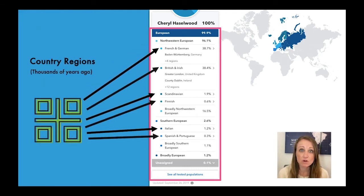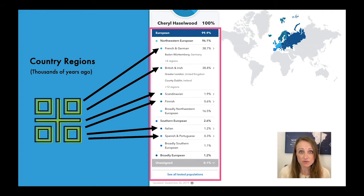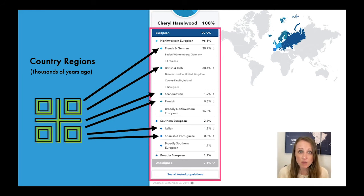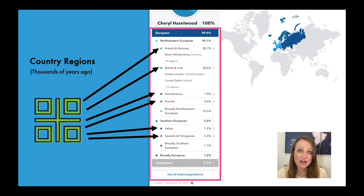The next kind of regions are more country- or region-specific — French and German, Scandinavian, Italian. These are useful but aren't always completely accurate. They're telling you you're from these places, and you may or may not be, but they're really good places to start looking for your heritage. The percentages aren't exactly precise, but you can be fairly confident in the general origin. These regions reflect your heritage back the last thousand years or so, so it could be a really long time ago.